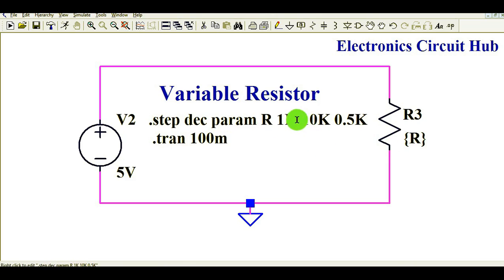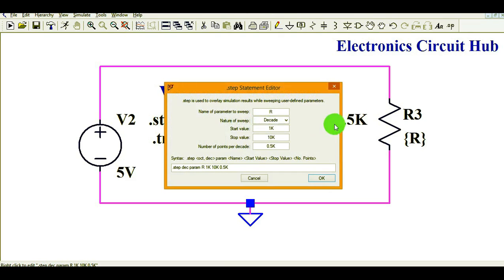And you want to pass the value of resistance value here in the resistance. So that is why, R, 1K, 10K with step of 0.5. So let me click it here, and you can see.